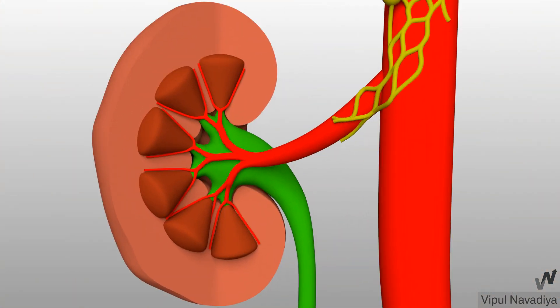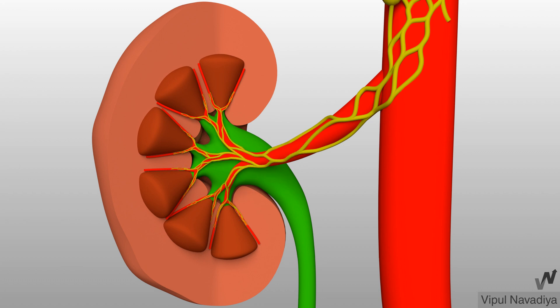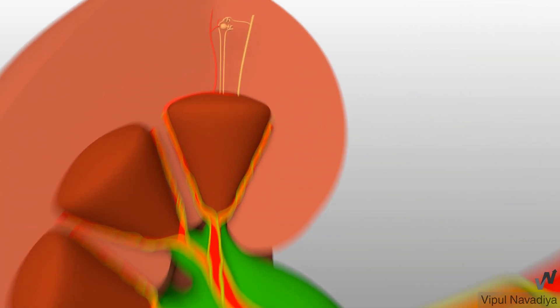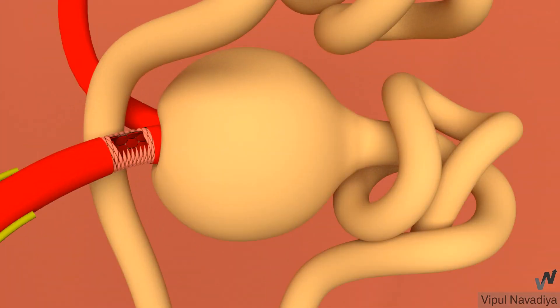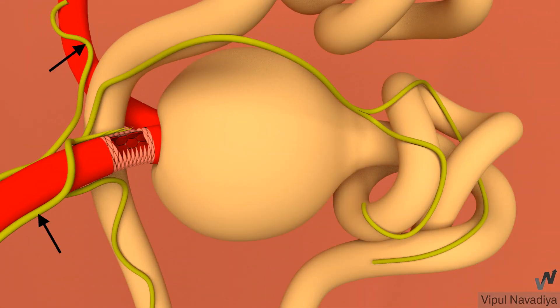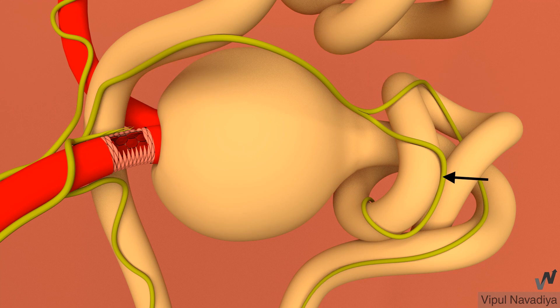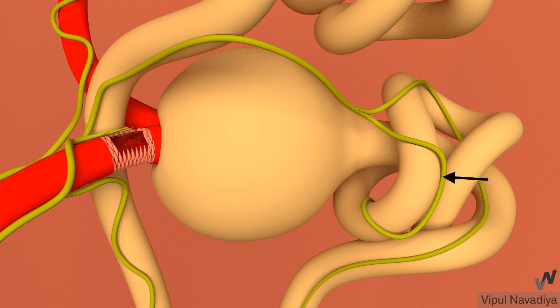These fibers run along the arteries and innervate the arteries, including afferent and efferent arterioles, granular cells of afferent arterioles, and tubular epithelial cells. Fibers supplying blood vessels regulate renal blood flow and glomerular filtration rate. Those supplying granular cells regulate renin release. Fibers supplying tubular epithelium regulate the rate of sodium reabsorption.